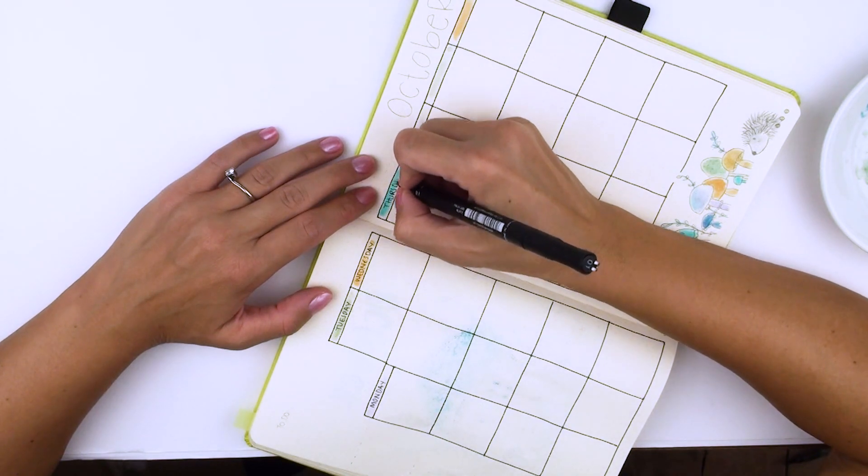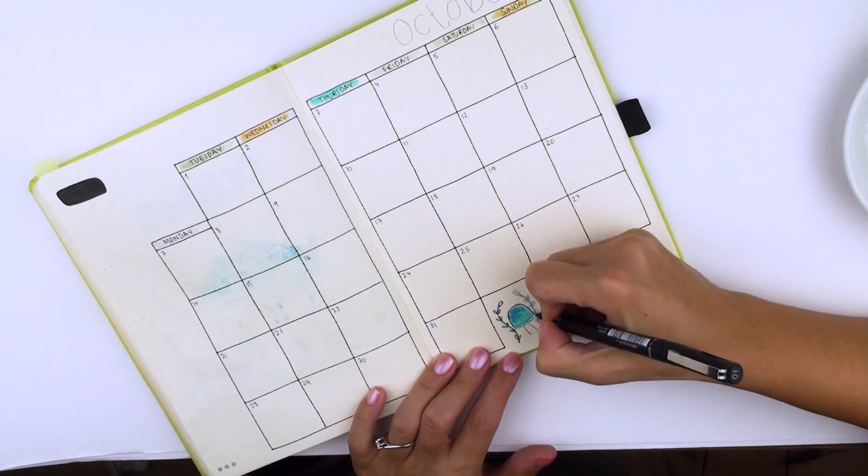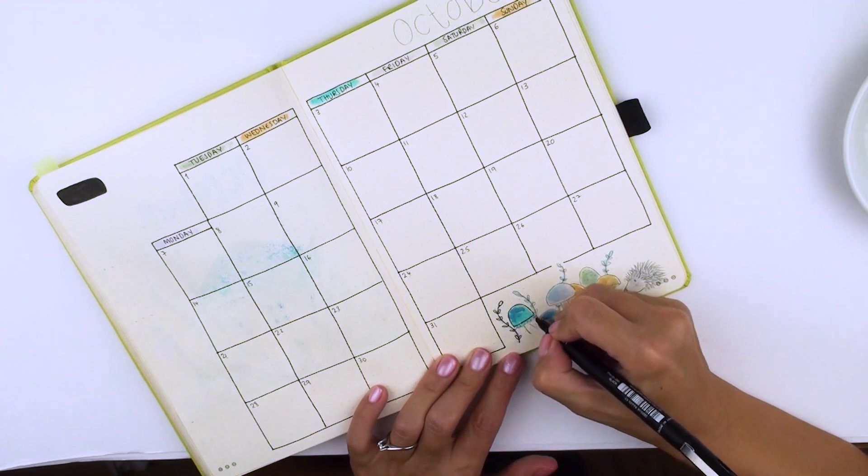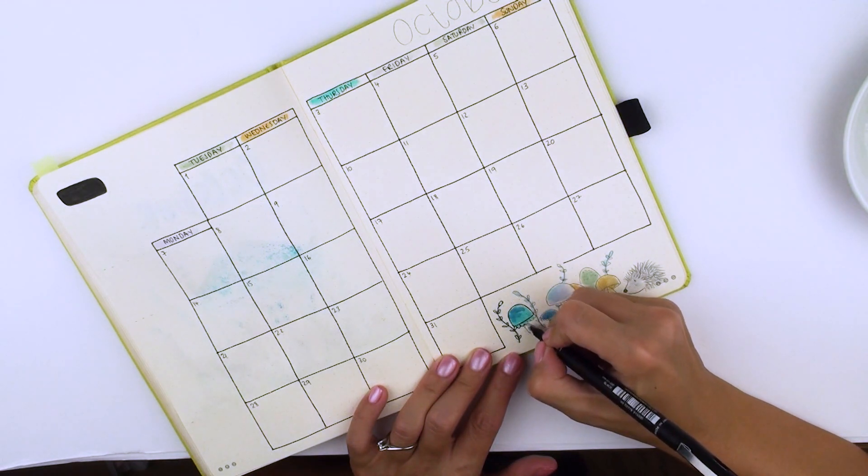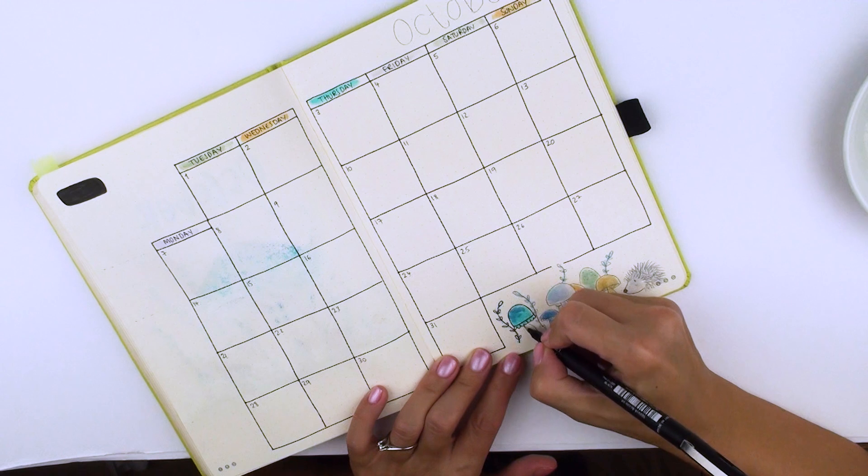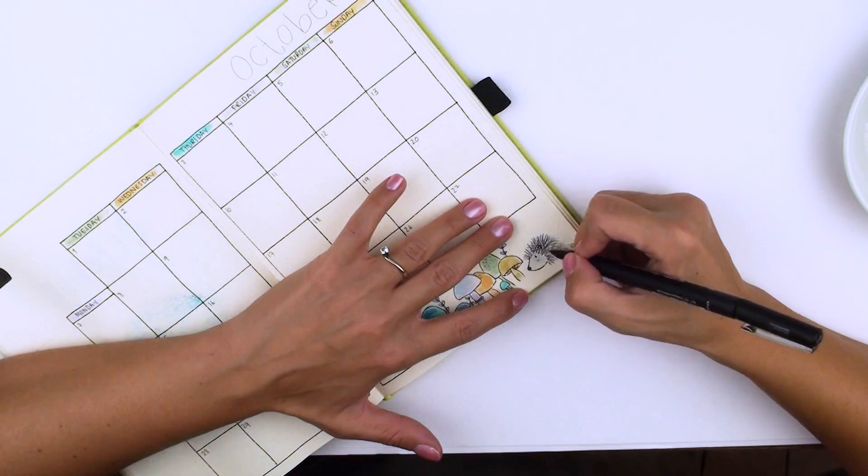I'm using a Dingbats notebook and its square is 7x7. I've also added lots of mushrooms and a shy little hedgehog at the bottom of the page.